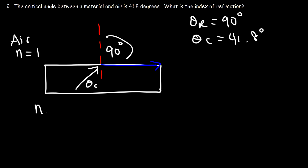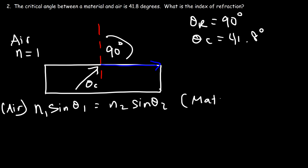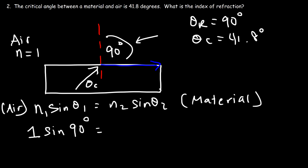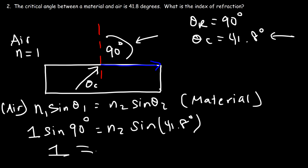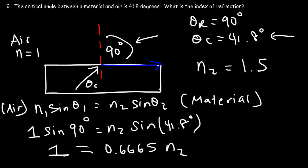Using Snell's law: n1 sine(theta1) = n2 sine(theta2). For the left side we use air — n1 = 1 and theta1 is the angle of refraction, which is 90°. For the right side, n2 is what we're looking for and theta2 is the critical angle, 41.8°. Sine 90 = 1, and sine 41.8° = 0.6665 times n2. So 1 divided by 0.6665 equals 1.5. The index of refraction of the material is 1.5, which is basically the index of refraction for glass.